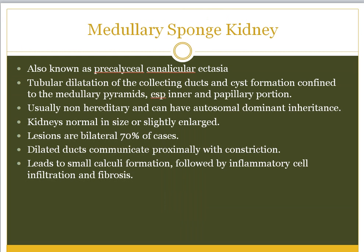The next cystic disease is medullary sponge kidney, also known as precaliceal canalicular ectasia. There is tubular dilatation of the collecting ducts and cyst formation confined to the medullary pyramids, especially the inner and papillary portion. They are not hereditary, but when they are, they follow autosomal dominant inheritance. Kidneys appear normal most of the time or slightly enlarged. The cysts are located in the medullary area, and dilated ducts communicate with a constriction causing some obstruction to normal flow.